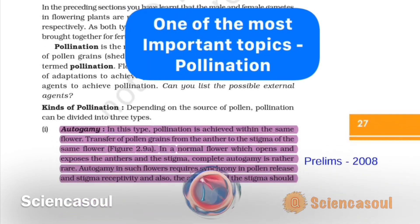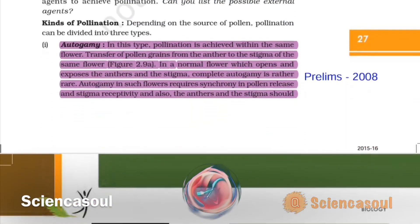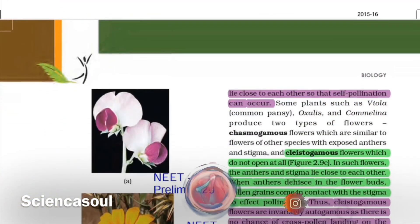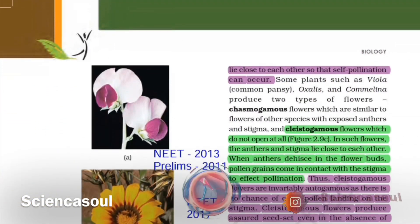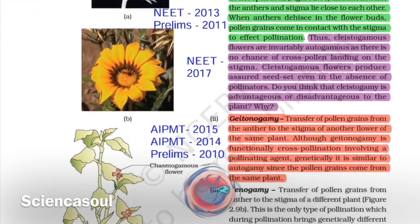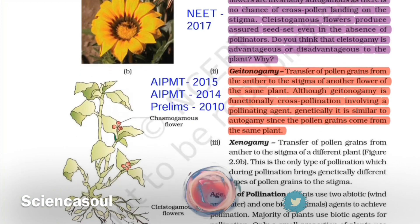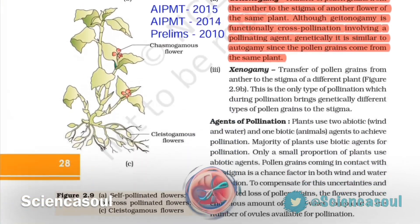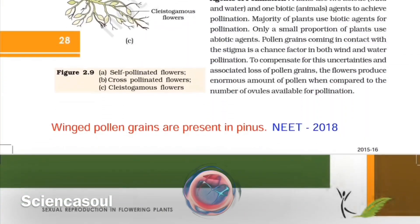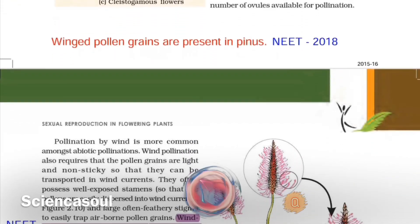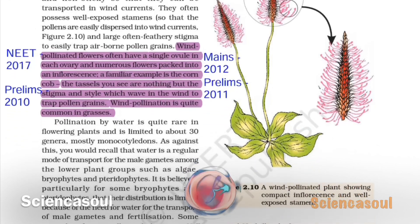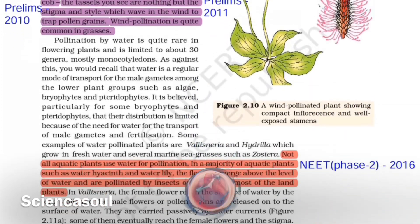One of the most important topics is pollination. From pollination, autogamy and gitanogamy are the examiner's favorite parts, as from 2005 to 2019, questions were asked from these two parts seven times. Moving forward to pollinating agents, the examiner's most favorite part is wind and insect pollination, as in 2018 it was asked to describe the relationship between yucca and moth species.